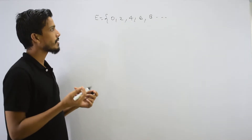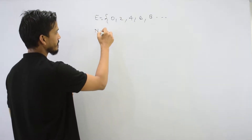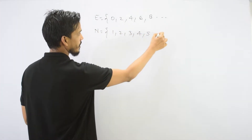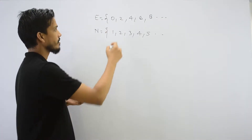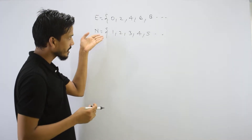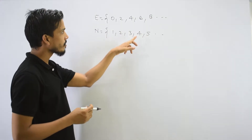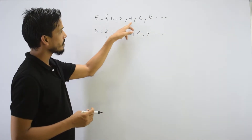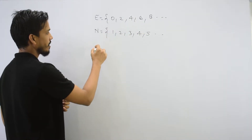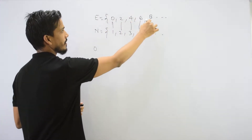Basically, countable set means countably infinite. Suppose that you have a natural number. If you have a set with 1-to-1 mapping, then what is a countable set? 1-to-1 mapping means bijection. So if you have an index 1, 2, 3, 4, 5, the values map to 0, 2, 4, 6, 8. So we can find out the mapping. The set of even numbers maps as: 1 to 0, 2 to 2, 3 to 4, 4 to 6, 5 to 8.